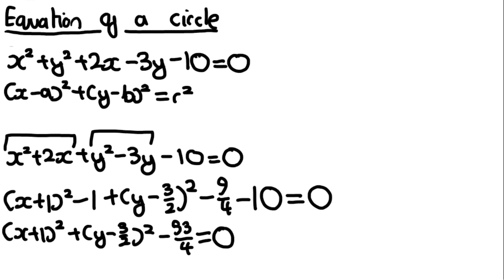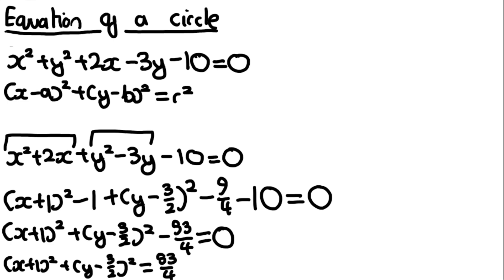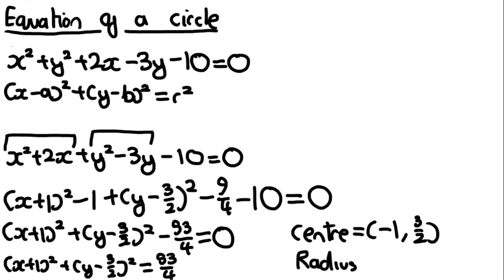Bringing the constant to the other side gives x plus 1, squared, plus y minus 3 over 2, squared, equals 53 over 4. Therefore the center of this circle is (−1, 3/2) and the radius is the square root of 53 over 4.